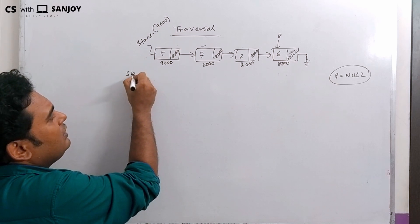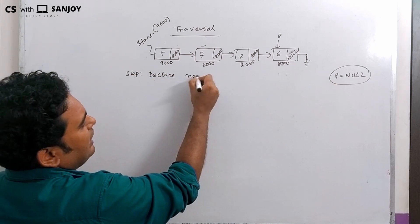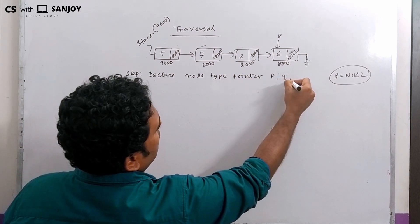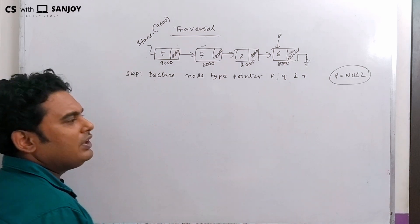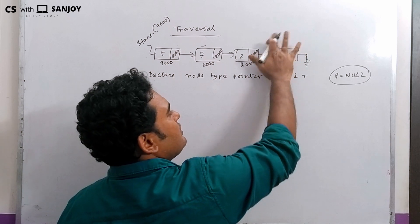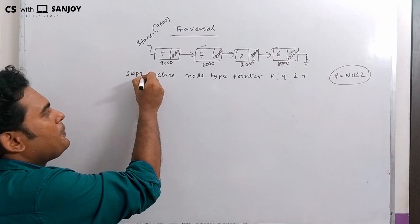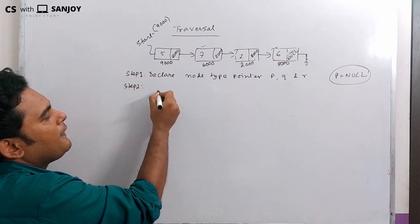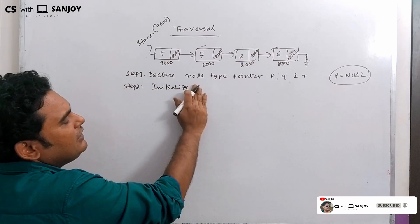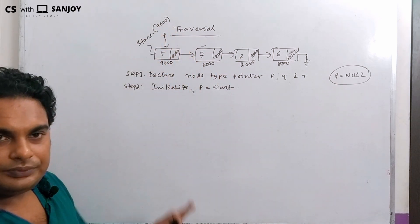Step 1: declare node type pointer P, Q, and R. Step 2: initialize P equals to start — P will be pointing to the start.